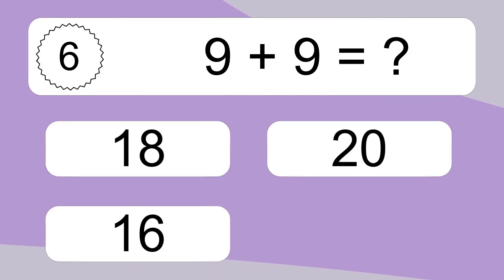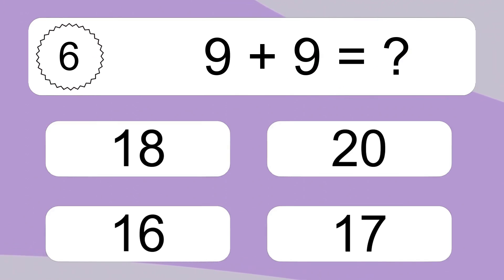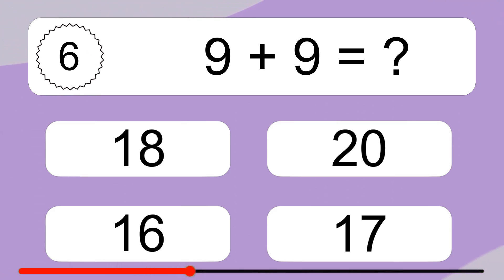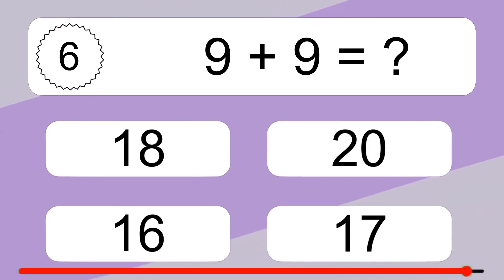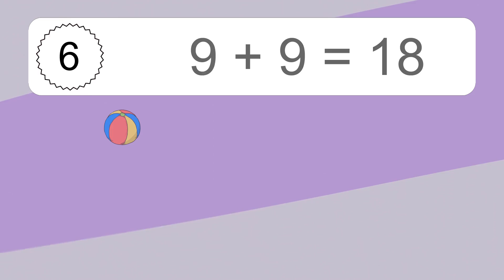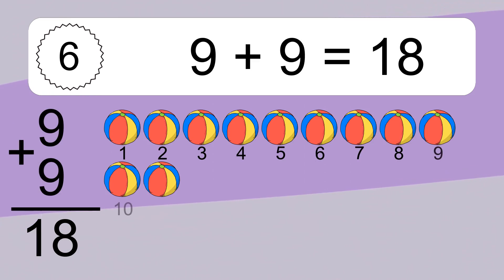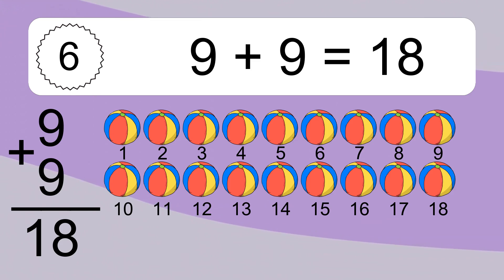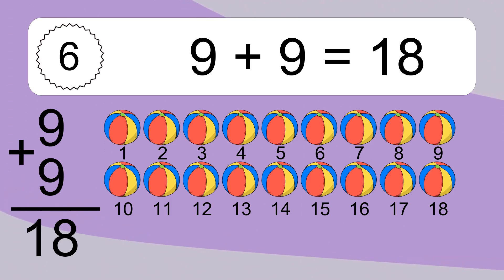9 plus 9 equals what? 9 plus 9 equals 18. Let's count it. 1, 2, 3, 4, 5, 6, 7, 8, 9, 10, 11, 12, 13, 14, 15, 16, 17, 18.